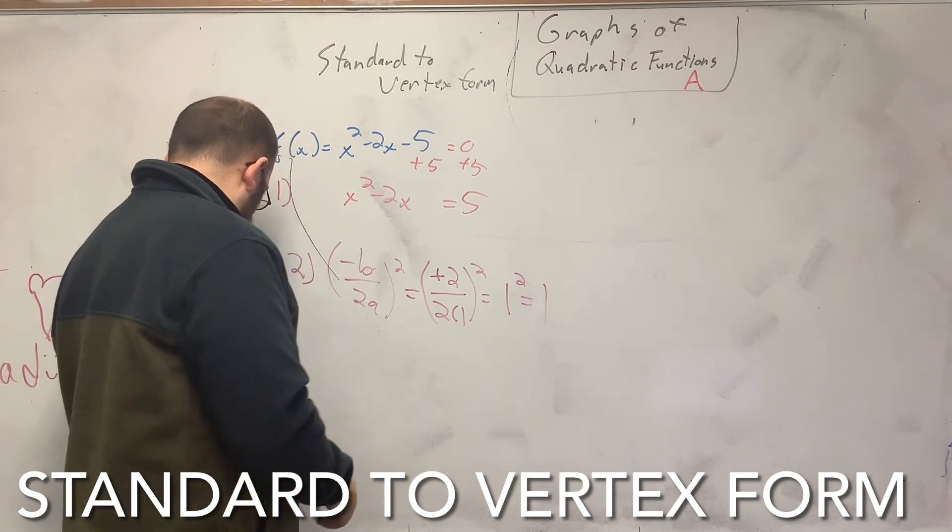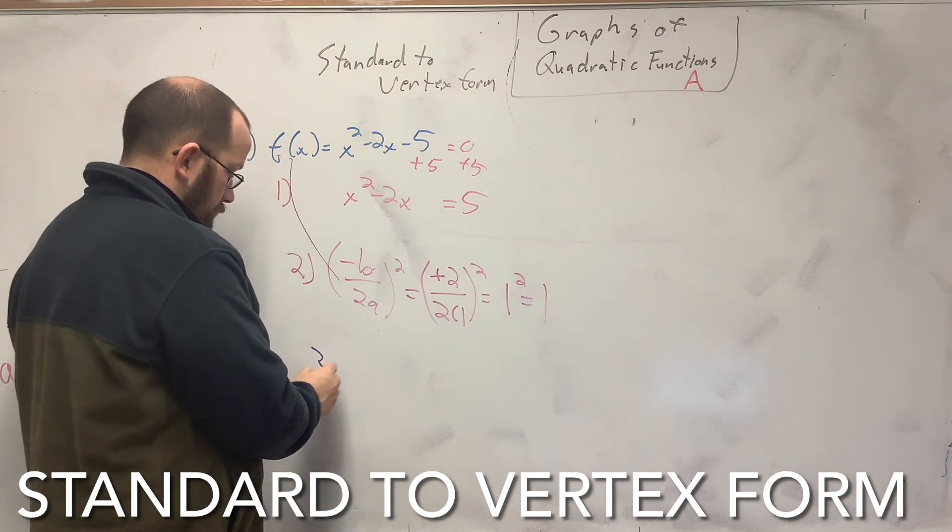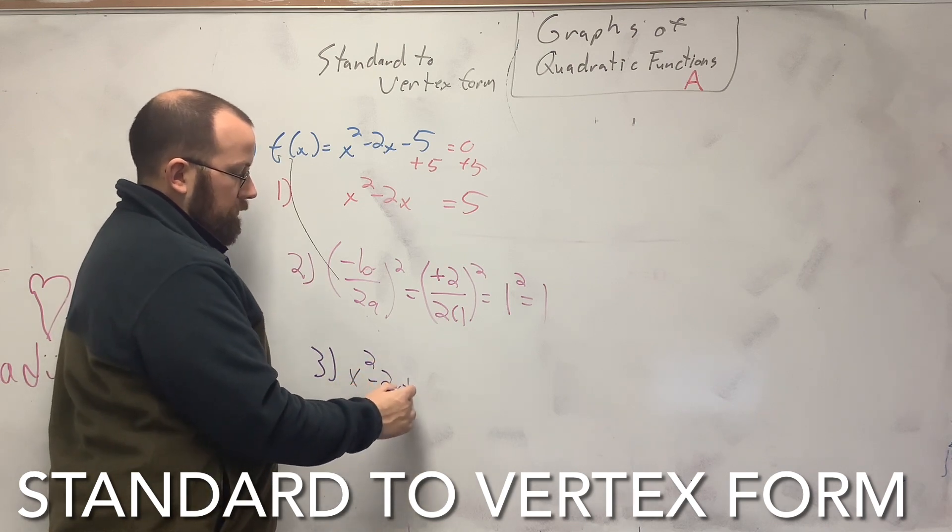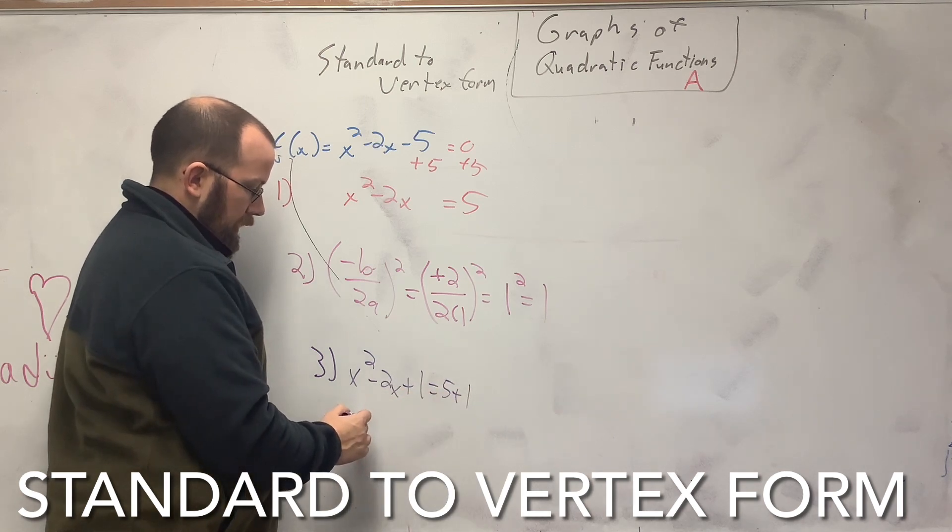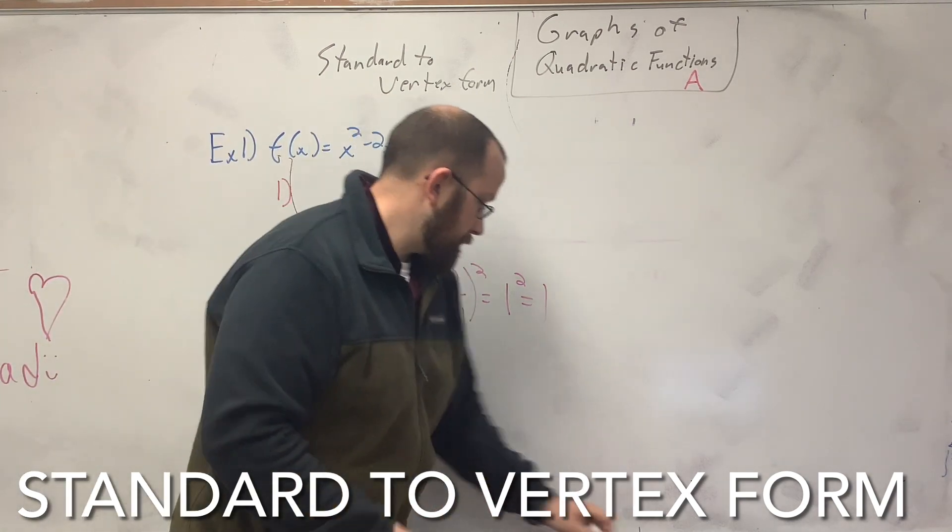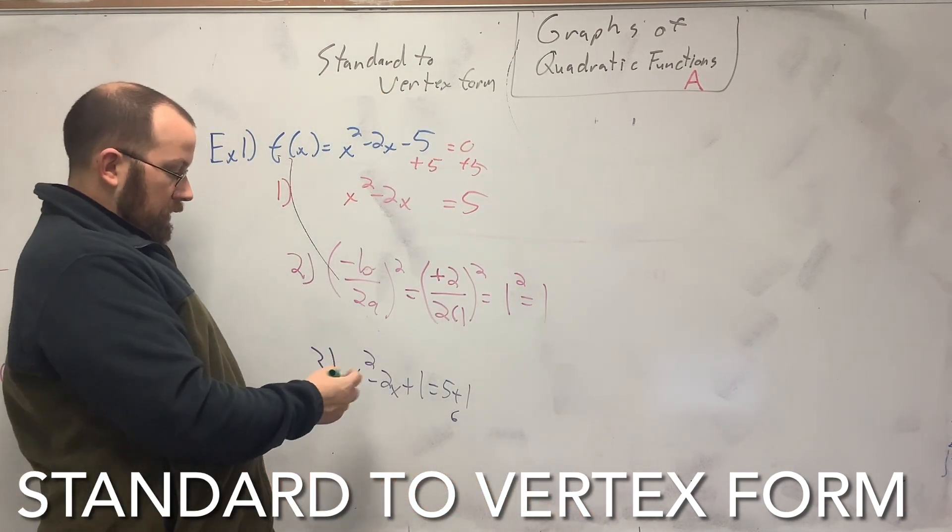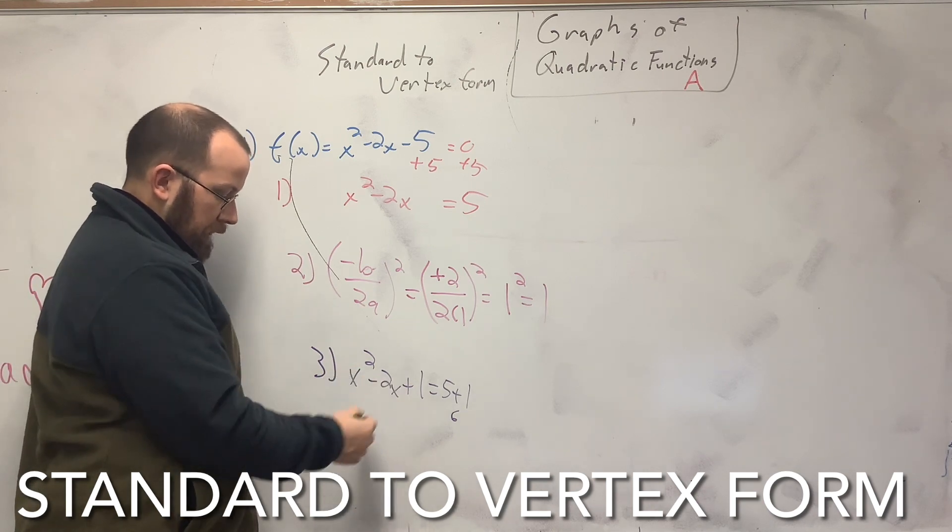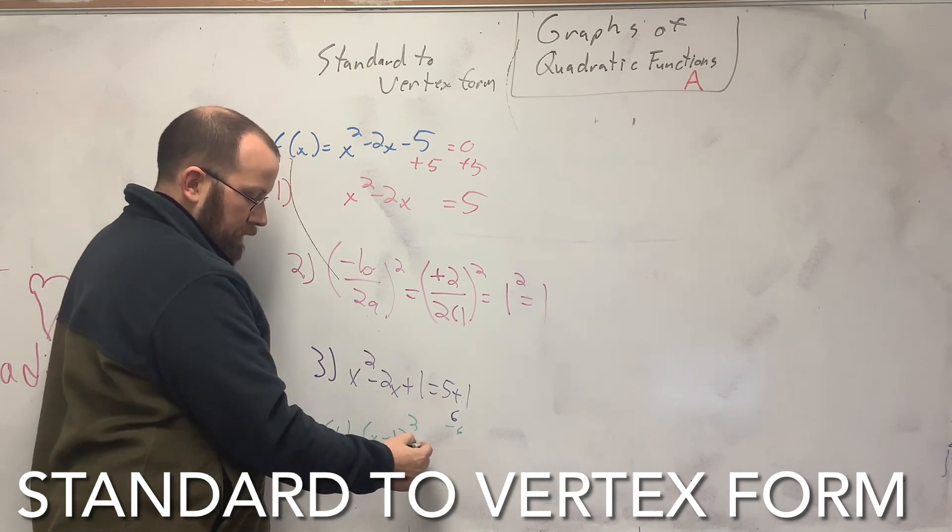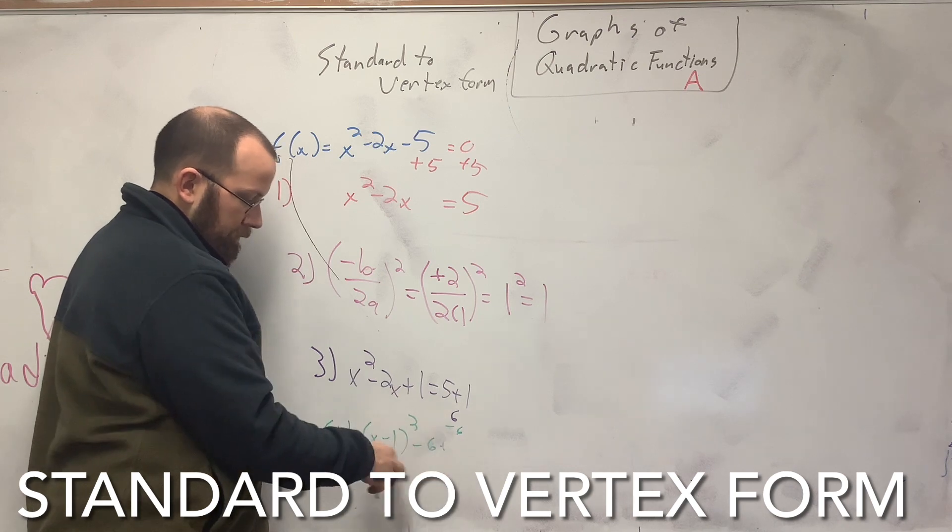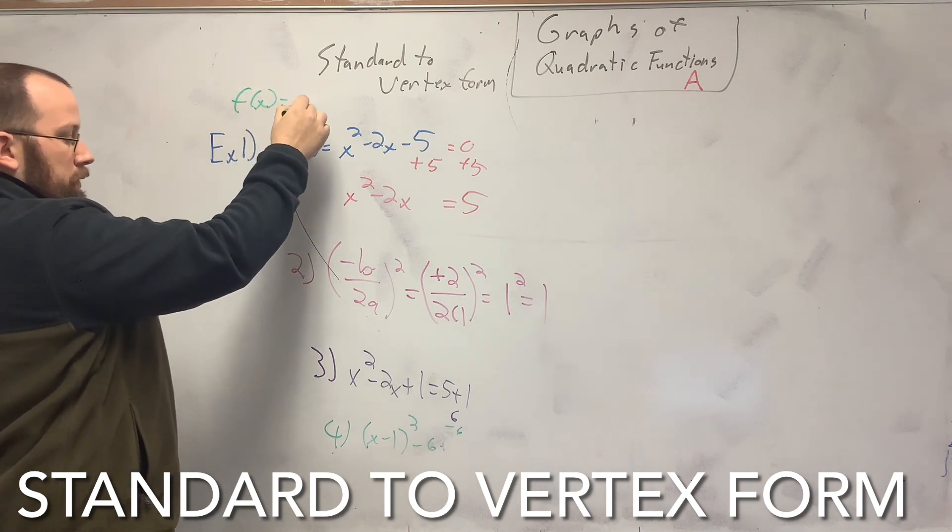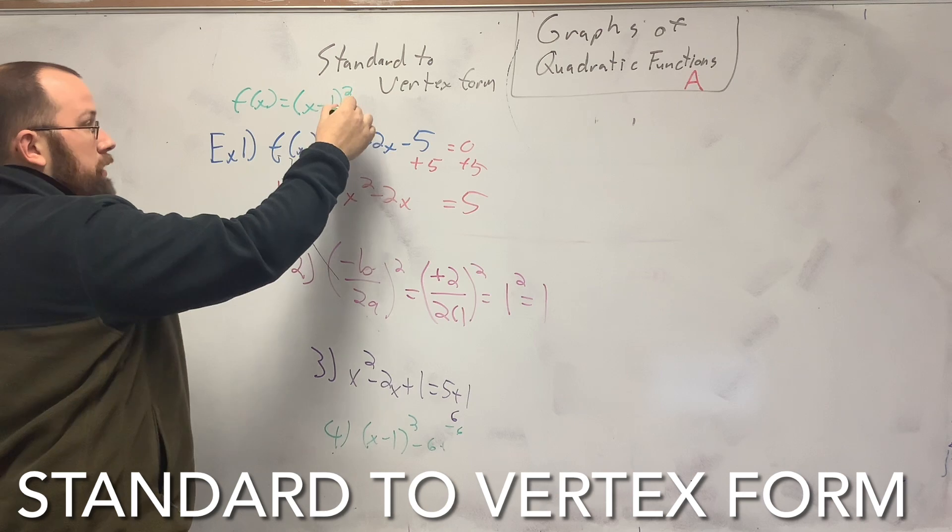Third step, you add 1 to both sides. Now that gives you 6. The fourth step is you just break it down like you usually do. So this becomes x minus 1 squared, then subtract the 6 over, and there you go. So your vertex form of this is f(x) equals x minus 1 squared minus 6.